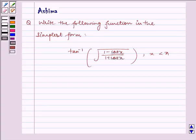Hello and welcome to this session. Let us understand the following problem today. Write the following function in the simplest form: tan inverse of square root of 1 minus cos x divided by 1 plus cos x, where x is less than pi.